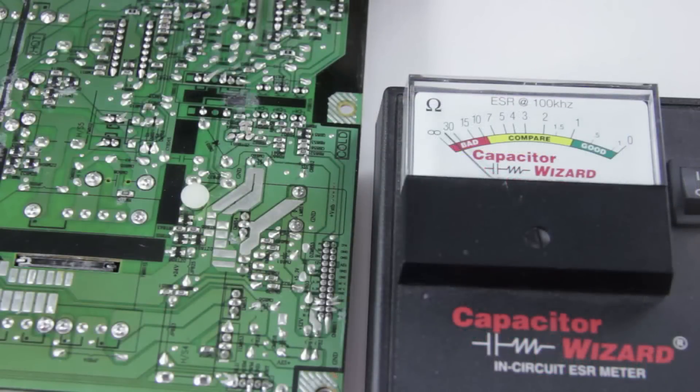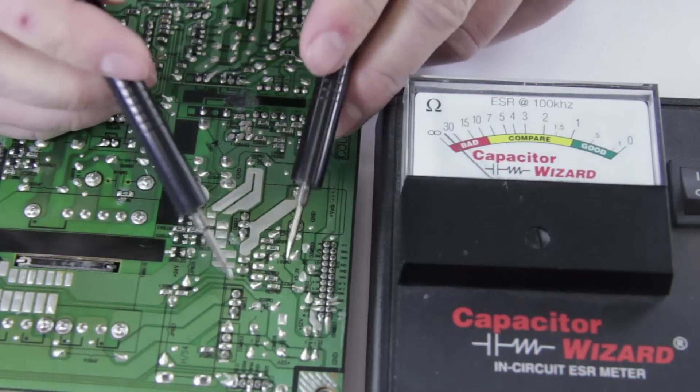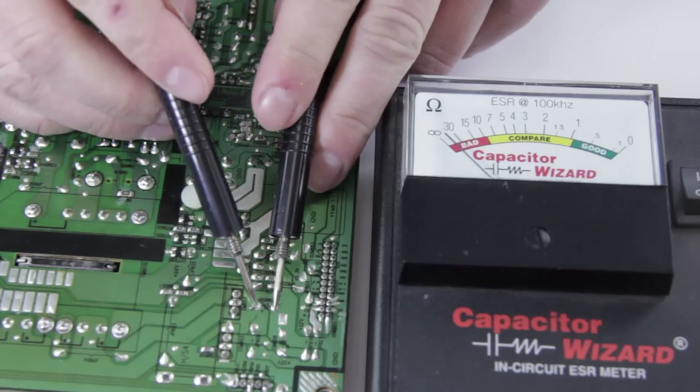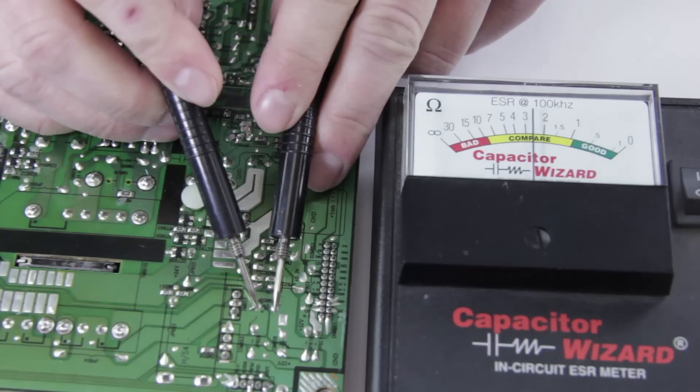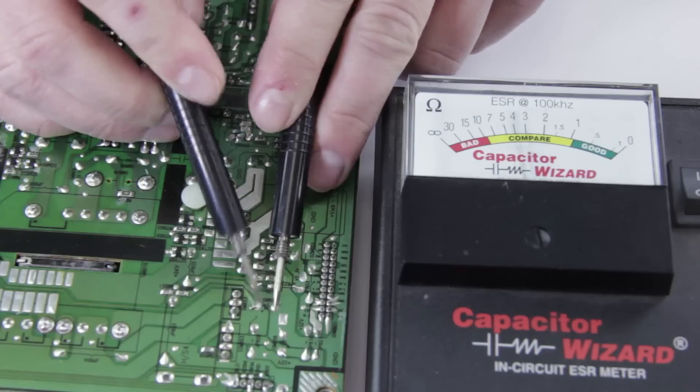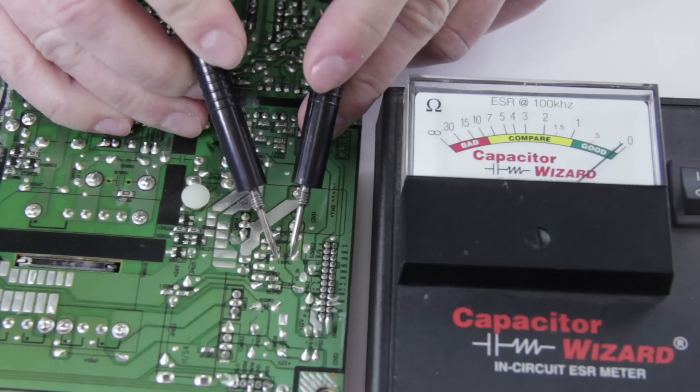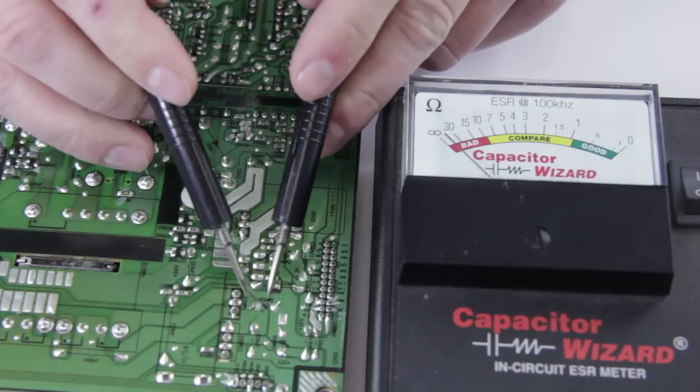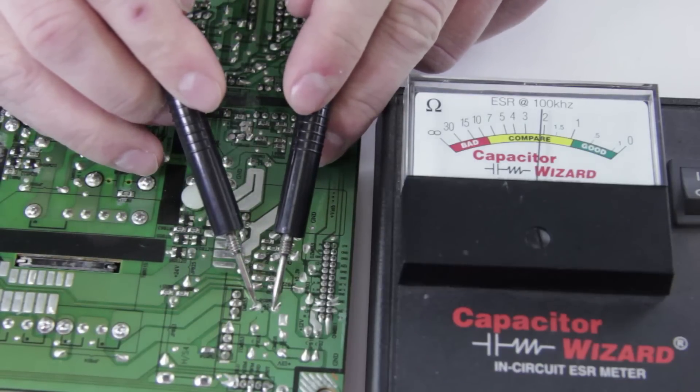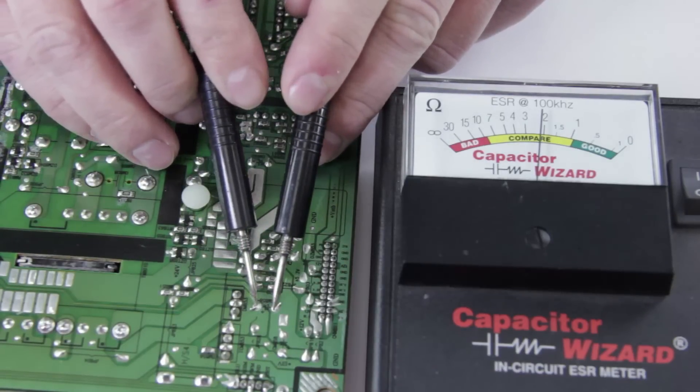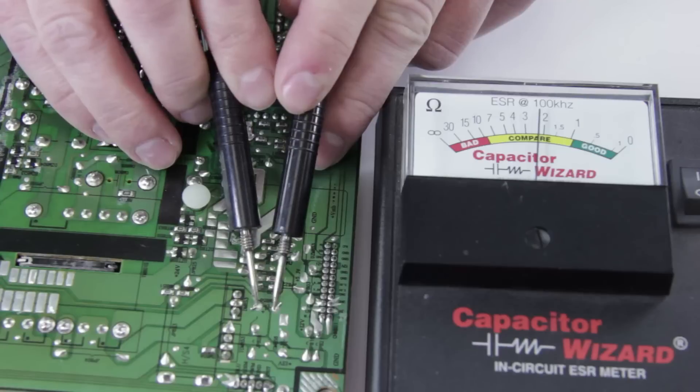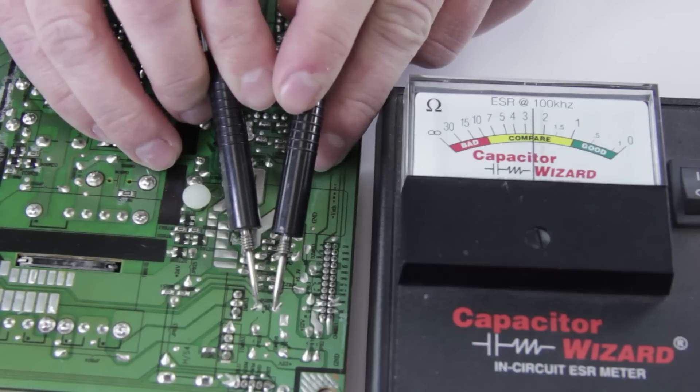So here we have a board and we can actually use the cap checker right on the board. We're going to try this one. And it comes up as compare. We can look around the board and try different caps. Let's try this one right here. And that one's definitely good. So we can be pretty sure that this one is bad. Then we will go ahead and we can pull the cap and check it using our regular multimeter and check the capacitance and replace it if it was defective.